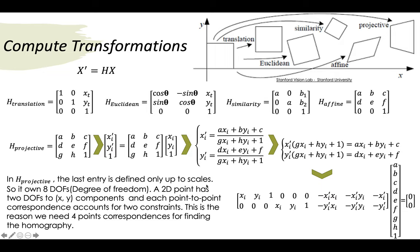We explain why only four point correspondences are needed to compute the homography. The projective transform has eight degrees of freedom, and each 2D point has two degrees of freedom. Therefore, each point-to-point correspondence provides two constraints, meaning four correspondences give the eight equations needed to solve for the homography.